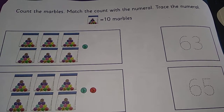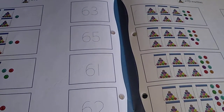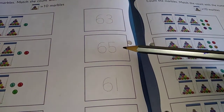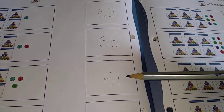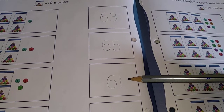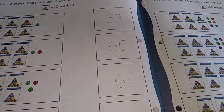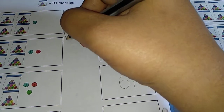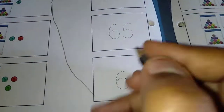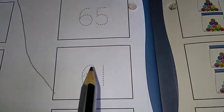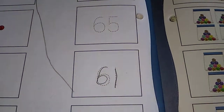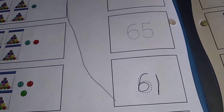So from the right side, see where the sixty-one number is. In first box we have sixty-three, in second box sixty-five, in third box sixty-one. So we are looking for sixty-one only. Match the first box to the sixty-one number, and then trace this number — sixty-one.